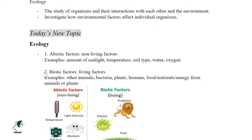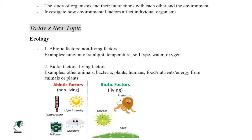In ecology we have two different factors: abiotic and biotic. Abiotic means non-living factors — things that don't have life. Examples include sunlight, temperature, soil, water, air, oxygen, carbon dioxide, and pollution.